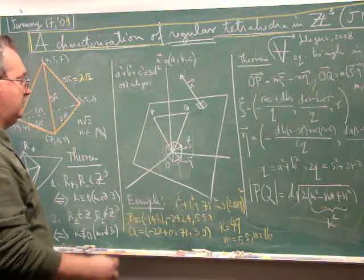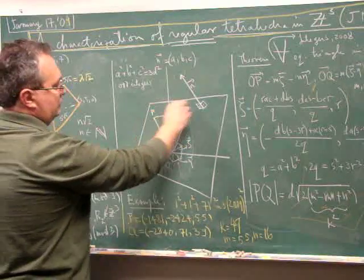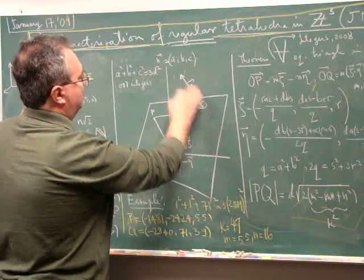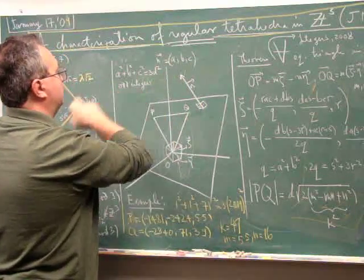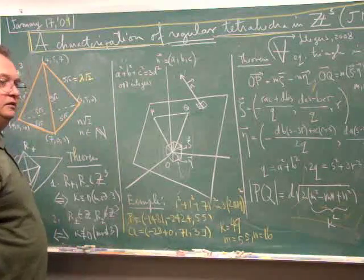It turns out that every equilateral triangle with integer coordinates is contained in a plane whose normal is given by some vector (A,B,C) with A, B, C being odd integers.